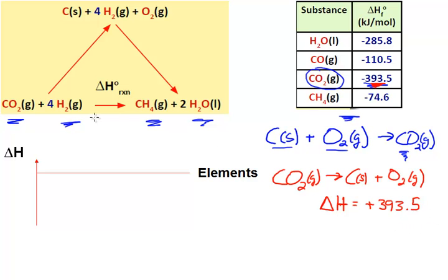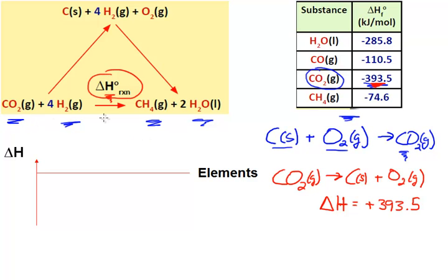Now let's go back to the reaction. I want to show you one way you could think about how this reaction could proceed. This is not actually how we understand the reaction proceeds, but using thermodynamic thinking we can estimate this by assuming a pathway. The important thing is that we can estimate the delta H of a reaction by choosing any pathway we want, as long as we start and end at the correct states.